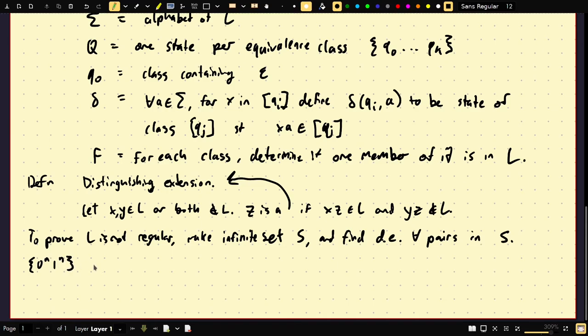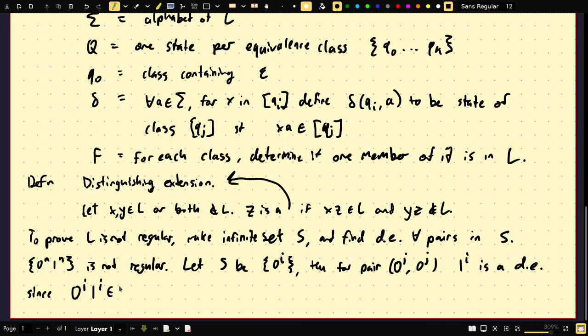Let's say, zero to the n, one to the n is not regular. Let S be the set zero to the i, where i is an integer, any integer. Then, for pair zero to the i, zero to the j, one to the i is a distinguishing extension, since zero to the i, one to the i is in L and zero to the j, one to the i is not in L.